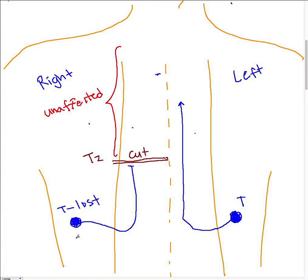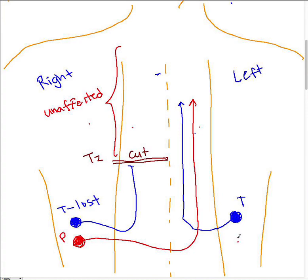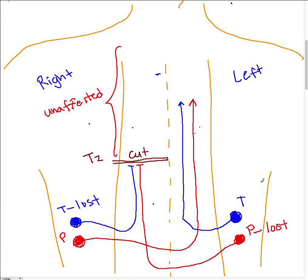Now let's invoke pain at a similar area below the cut on the right side of the body. Pain will decussate immediately, so it travels up the contralateral side of the spinal cord — and there are no problems, since it avoids the cut. Now for pain on the left side of the body: it decussates immediately and tries to travel up the contralateral spinal cord, but it encounters the cut and is blocked. So pain on the left side of the body is lost in this scenario.